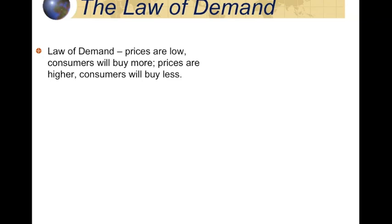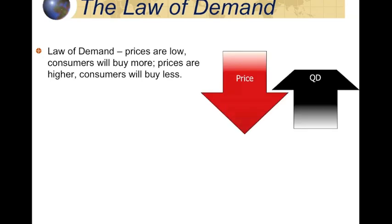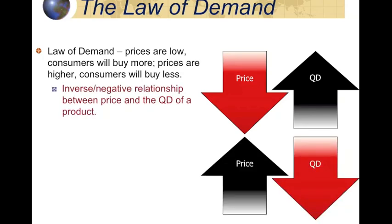The law of demand says that when prices are low, consumers tend to want to buy more products. So when prices are low, people buy more — you go into a store, you see the prices have dropped, you buy more stuff. Because these two forces are working in opposite directions, we refer to this as an inverse relationship. As prices go down, we buy more; as prices go up, we buy less. This is known as an inverse relationship.